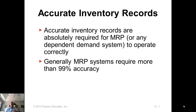We have now discussed master production schedule and bill of materials. Next, let's look at the inventory records — inventory that's available in stock. We have to have accurate inventory records in the system. We talked about cycle counting in Chapter 12, and that's very important. You need to do cycle counting to make sure that the inventory record in the computer is accurate with the actual physical availability.